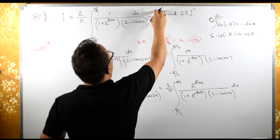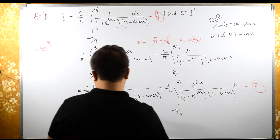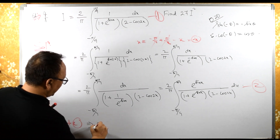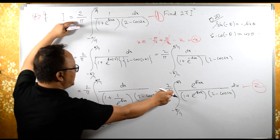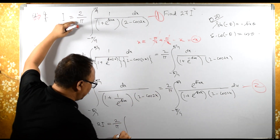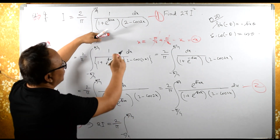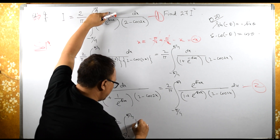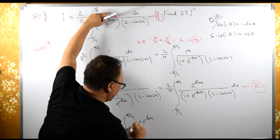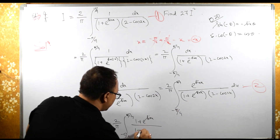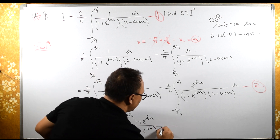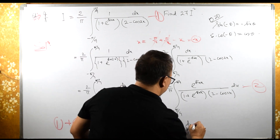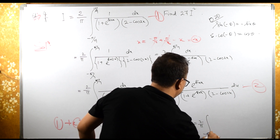Now let's add equation 1 and equation 2. This gives 2I equals 2 by pi, integral from minus pi by 4 to pi by 4. The denominator is the same, so in the numerator we have 1 plus e raised to sine x, and in the denominator 1 plus e raised to sine x, times 2 minus cos 2x. These two cancel, giving us 2 by pi integral from minus pi by 4 to pi by 4 of 2 minus cos 2x dx.